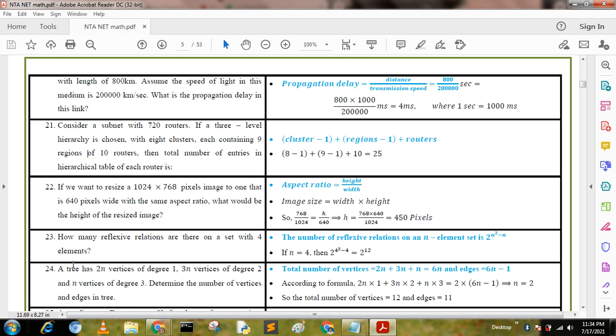Next question: A tree has 2n vertices of degree 1, 3n vertices of degree 2, and n vertices of degree 3. Determine the number of vertices and edges in the tree.